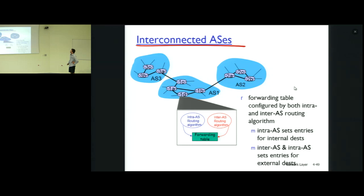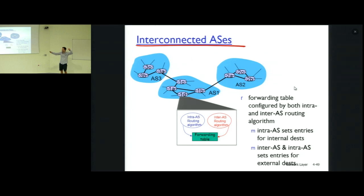The internet is composed of autonomous systems, which are internet service providers and similar entities. Within a router we have two processes: intra-AS routing, which computes paths for destinations within the autonomous system, and a process that computes paths for the global internet running on border routers. In border routers both processes run concurrently and together compute the forwarding table.